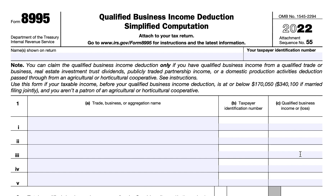In Line 1, you will annotate each trade, business, or aggregation name in Column A, the taxpayer identification number, and the qualified business income or loss. If you aggregated trades or businesses, you must attach Schedule B from Form 8995-A or a similar schedule. On Line 1B, you will enter the employer's identification number. If there is no EIN, you may use your Social Security number or individual taxpayer identification number. If you are the sole owner of an LLC not treated as a separate entity for federal tax purposes, enter the EIN given to the LLC.